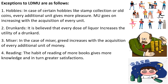There are some exceptions to this law. First is hobbies. In the case of certain hobbies like stamp collection or collection of old coins, as more additional units are acquired, we get more pleasure. If your hobby is stamp collection and you are getting more stamps, you get more satisfaction — marginal utility goes on increasing with every unit. So here the law fails. Second is the case of drunkards — it is believed that every dose of liquor increases the utility of drunkards, so this law won't apply.